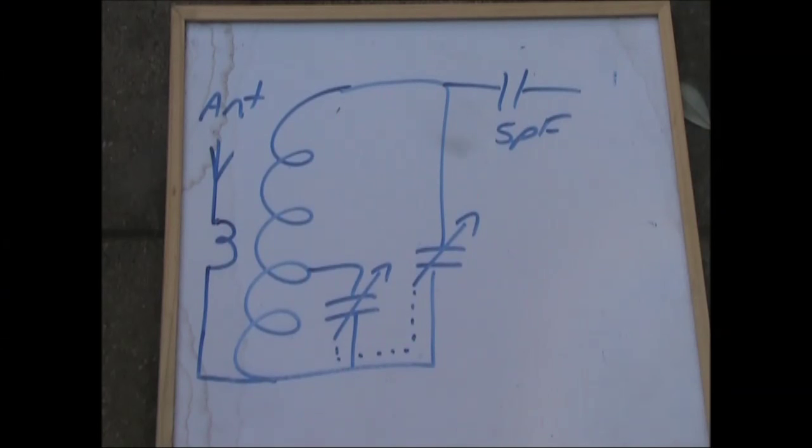One design subtlety of this is if you're using this arrangement as the front end of a multiband dual conversion receiver. Let's say the receiver covers 3.5, 7, 10, 14 megahertz. The lower frequency here might be 3.6 megahertz, and that's fine, that passes the desired signals.